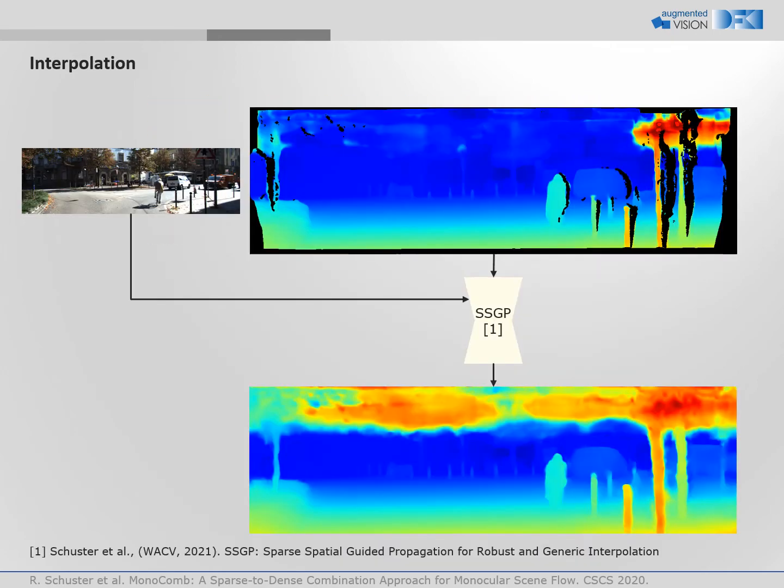To interpolate the gaps, we apply SSGP, which is an image-guided interpolation network with a special focus on robustness against noise and different densities of the input. SSGP is able to fill in the gaps of the scene, though introducing some artifacts.